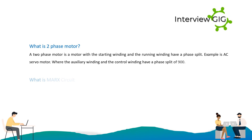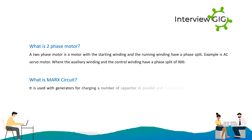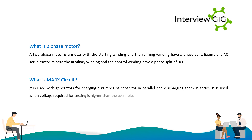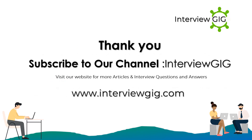What is a Marx circuit? It is used with generators for charging a number of capacitors in parallel and discharging them in series. It is used when the voltage required for testing is higher than the available supply voltage.